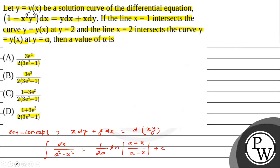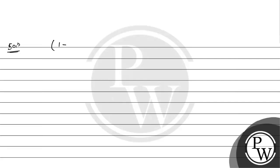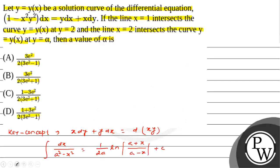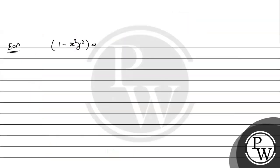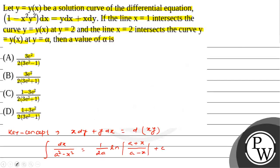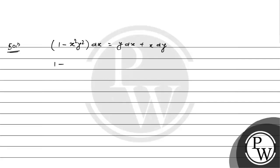We have the differential equation: (1 - x²y²) dx = y dx + x dy. This can be rewritten as dx = d(xy) / (1 - x²y²), recognizing that y dx + x dy = d(xy).